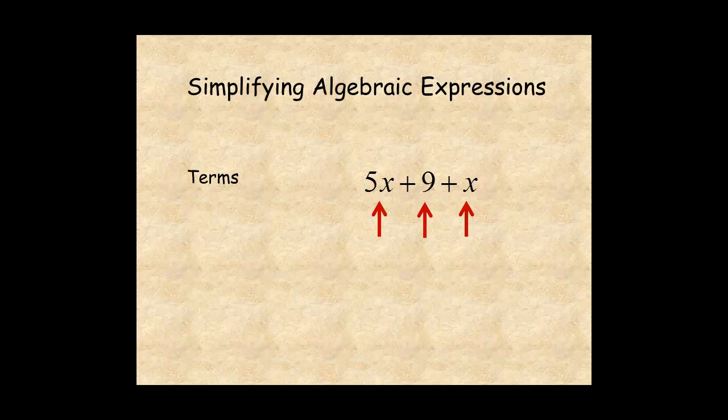The coefficient of a term is its numerical factor, or in simpler words, the number in front of the variable. In this example, 5 is the coefficient of the first term. The second term has no variable, so it has no coefficient. And 1 is the coefficient of the third term. This is because x can be written as 1x.